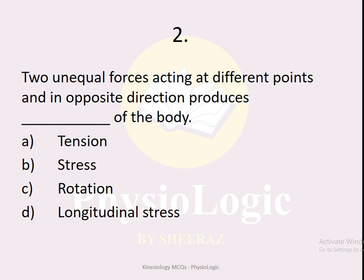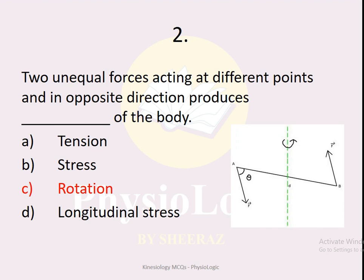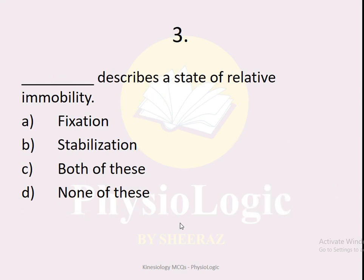MCQ number two: when two unequal forces act at different points and in opposite directions, it produces which of the following — tension stress, rotation, or longitudinal stress? The correct answer is rotation. When two unequal forces act at two different points, as shown in the figure, it results in rotation of the body.